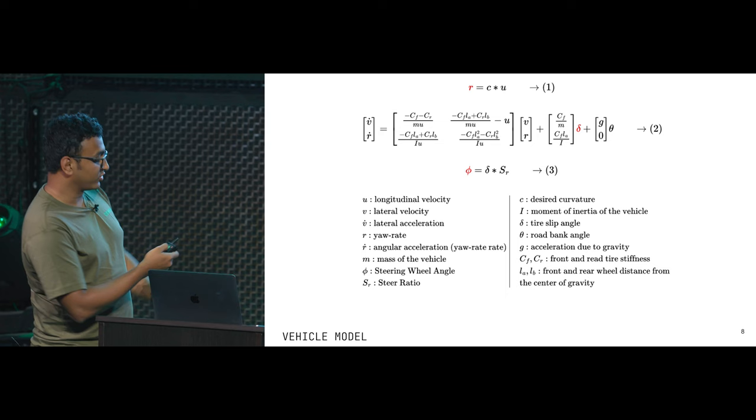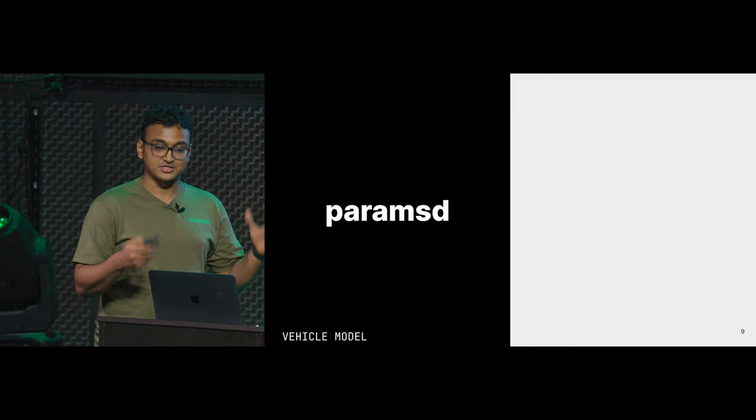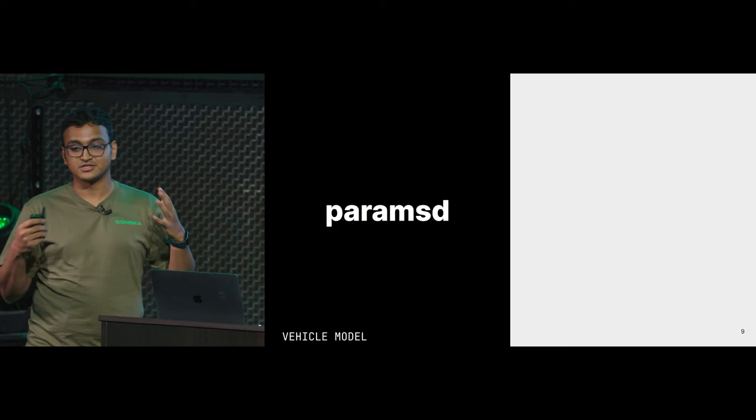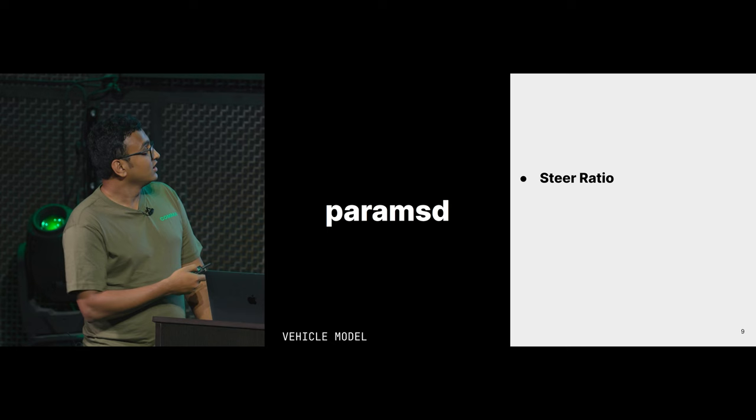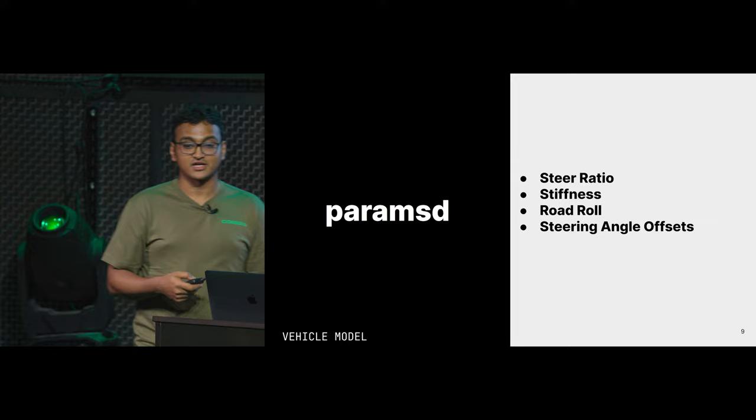We have a daemon in OpenPilot called ParamsD, which learns all these parameters. It learns the dynamics of your particular car — things like the steer ratio, the tire stiffness, the road roll, the steering angle offsets, and all of these things about your specific car. An interesting thing about steering angle offsets: to go straight, you would assume you keep your steering angle at zero degrees, but that's not true. All cars have some offset — you might need to keep your steering angle at two degrees or minus two degrees — and that depends on your car and how long you've driven it. This is also something we learn live while you're driving.